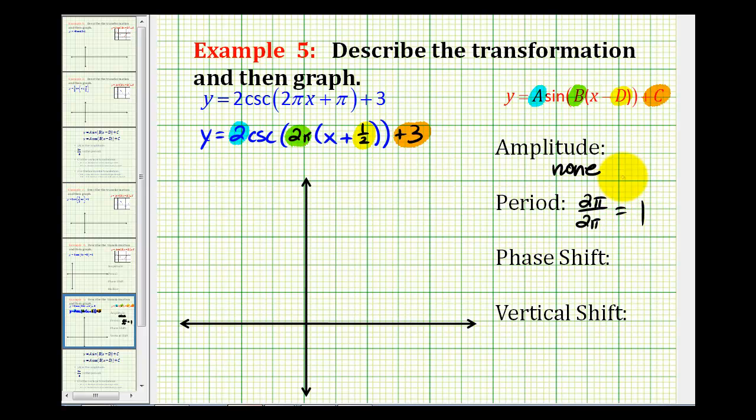The phase shift is determined by d. And to fit this form, we would have x minus negative one half. So it's going to be one half unit to the left. Remember, if it's x plus one half, it's going to be to the left. If it was x minus one half, it'd be to the right.